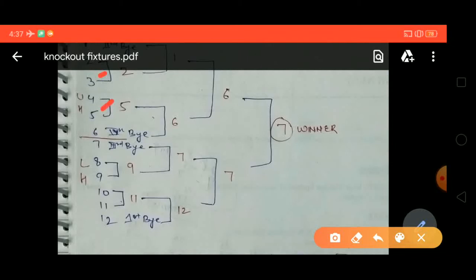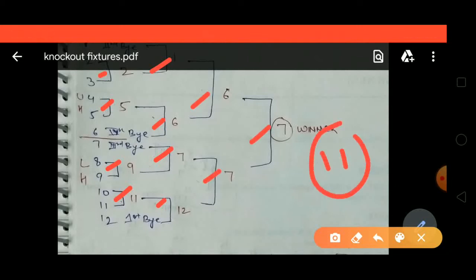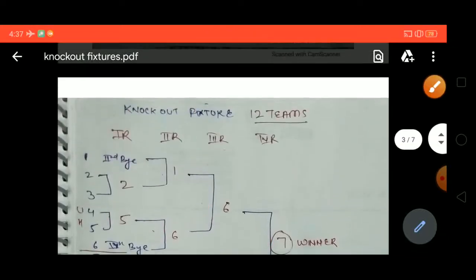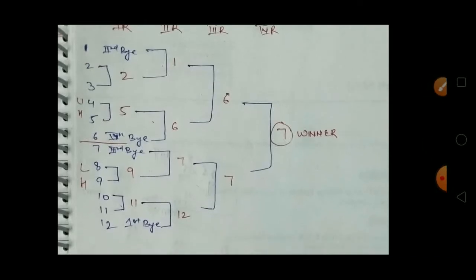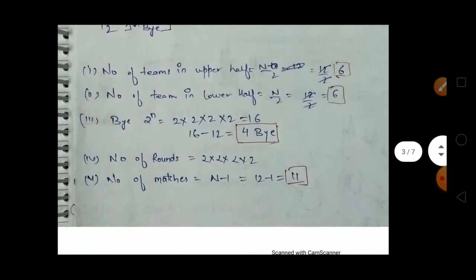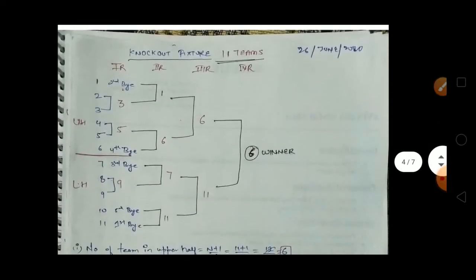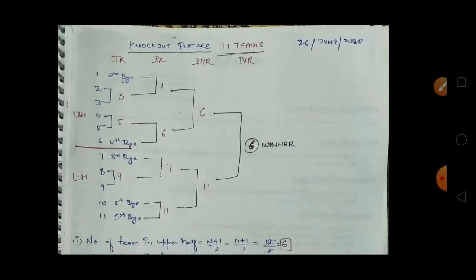We can verify we have 11 matches by counting: match 1, 2, 3, 4, 5, 6, 7, 8, 9, 10, 11 — exactly 11 matches. Our calculation is correct. We have covered all four byes. If we have more byes like 5th, 6th, 7th, etc., we put them in the same process as the first to fourth byes.